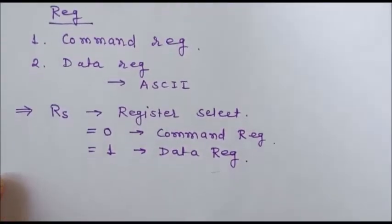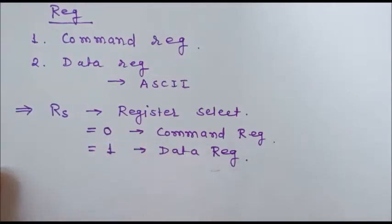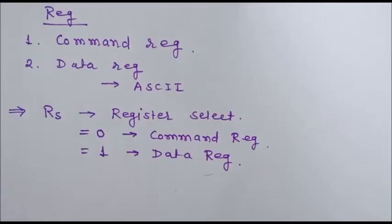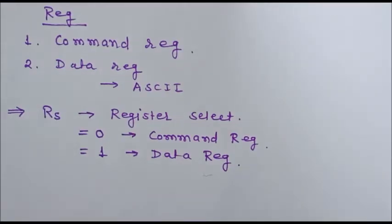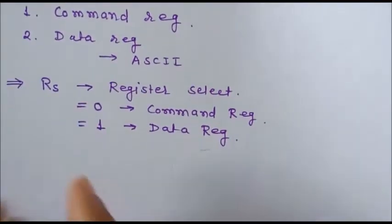Whenever we want to write a command or data, we first have to select the appropriate register. For example, when we want to write a command in the command register, RS must be at logic 0. When we want to write data — that is, the ASCII value of a character to display on LCD — we select the data register by giving logic 1 to the RS terminal.